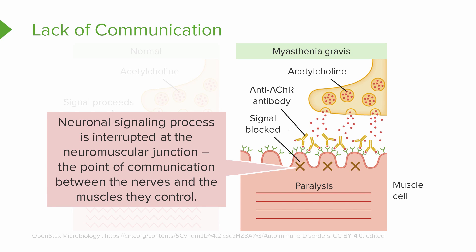Sometimes we use words and don't really think about what they mean. Neuromuscular junction is the little space in between your nerves — represented up there by the kind of yellowy form — and the muscles, the more flesh-colored area there. When the communication is interrupted where the nerve cells connect with the muscles that they control, that's where the problem occurs.